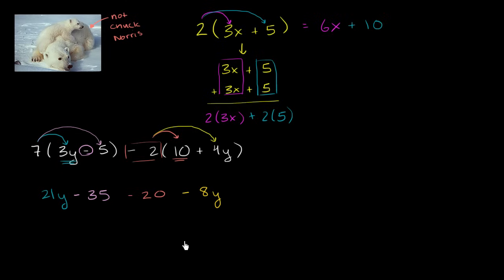And are we done simplifying? Well, no, there's a little bit more that we can do. We can't add the 21y to the negative 35, or the negative 20, because these are adding different things, or subtracting different things. But we do have two things that are multiplying y. Let me do them all in this green color.